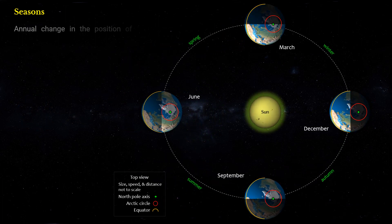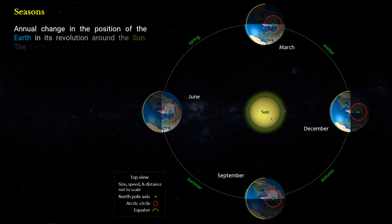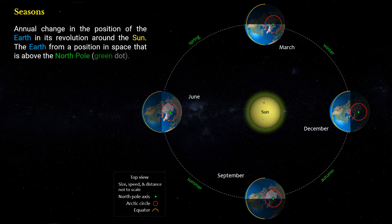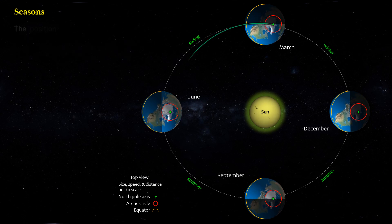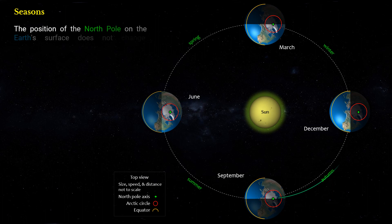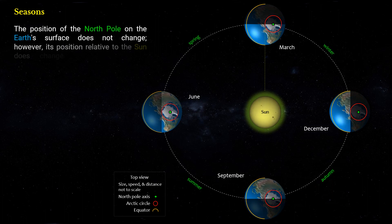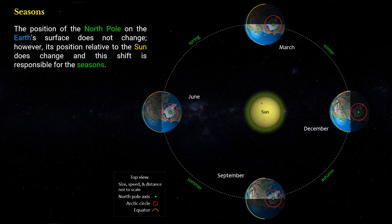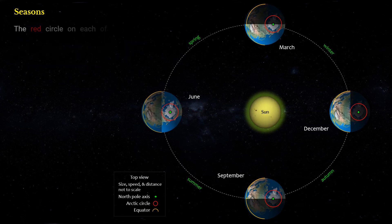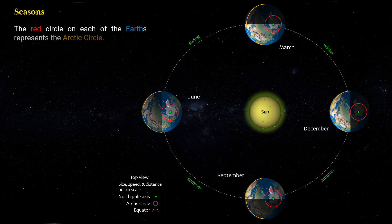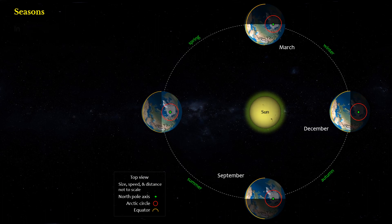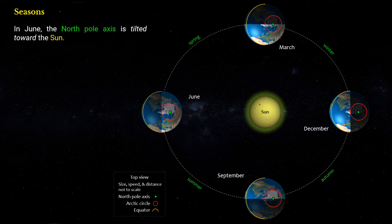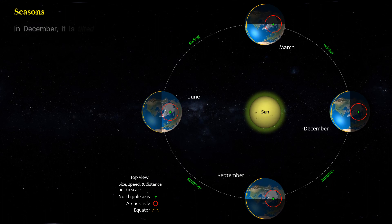This shows the annual change in the position of the Earth in its revolution around the Sun, viewed from above the North Pole (green dot). The position of the North Pole on Earth's surface does not change; however, its position relative to the Sun does change, and this shift is responsible for the seasons. The red circle on each Earth represents the Arctic Circle. In June, the North Pole axis is tilted toward the Sun. In December, it is tilted away from the Sun.